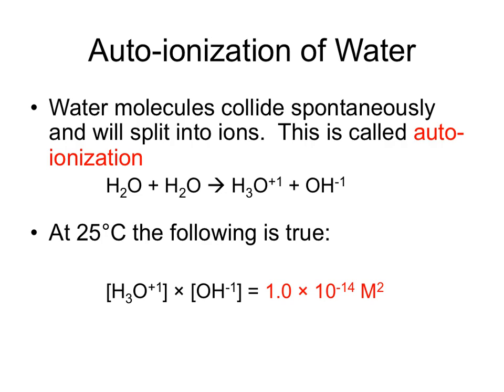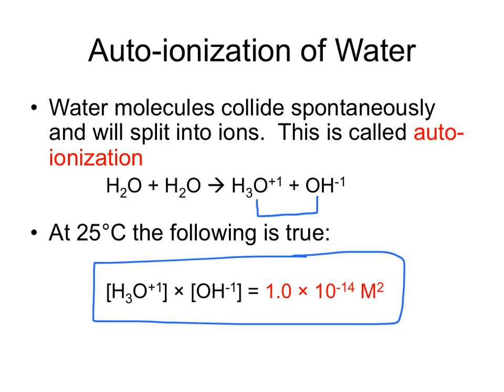Before we do any other calculation, we need to talk about auto-ionization of water. Water molecules will collide with each other, and occasionally two water molecules will split into the hydronium and the hydroxide ion — this is called auto-ionization. That is why pure water is considered neutral: there is the same amount of hydronium ions as hydroxide ions. This occurs at 25 degrees Celsius, making it true that hydronium ions and hydroxide ions, when multiplied together, will always have a product of 1 times 10 to the negative 14th molarity squared. This is called Kw, the equilibrium constant for water, and it is provided on your reference sheet.